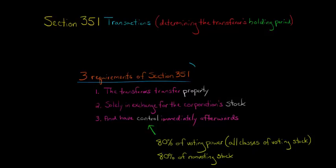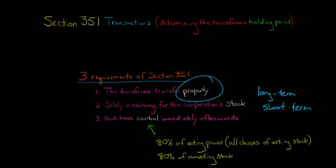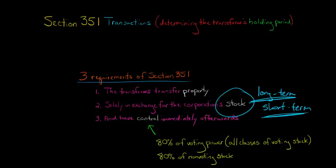Let's say you do a Section 351 transaction and you receive stock in a corporation. Is this going to be long-term or short-term if you were going to sell the stock immediately or six months later? Whatever property you transferred to the corporation in exchange for that stock — say you had held that property for three years — is that holding period going to be used to determine whether the stock, if you were to sell it, would generate a long-term or short-term capital gain?